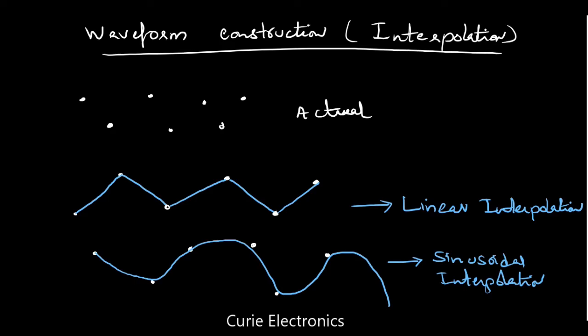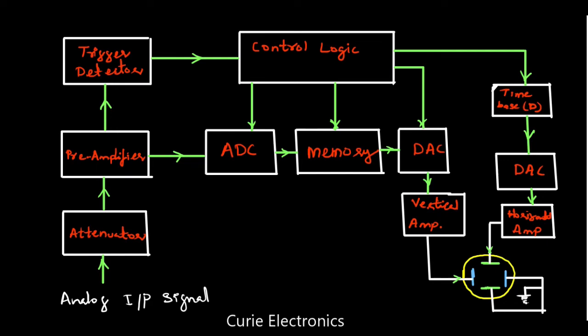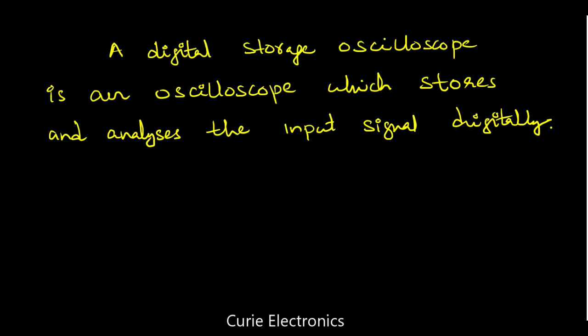In the next video we will learn about the features and the probes used for the oscilloscope or DSO. This is waveform construction and the basic block diagram showing how a DSO works. The definition: a digital storage oscilloscope is an oscilloscope which stores and analyzes the input signal digitally.